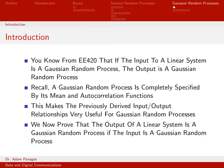In this video we want to think about specifically what happens when we have an input process to a linear system that is a Gaussian random process. You probably know from the prerequisite for this course that when you have an input Gaussian random process, the output is also a Gaussian random process — something that was probably just taken as a fact in previous courses.